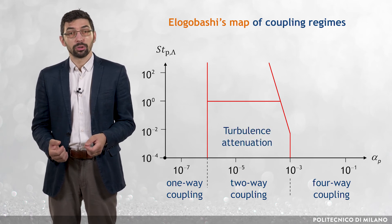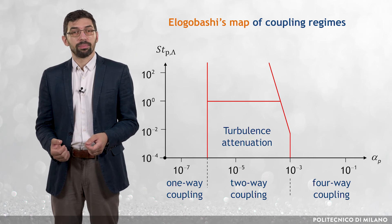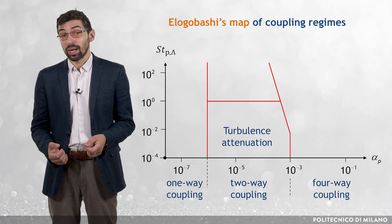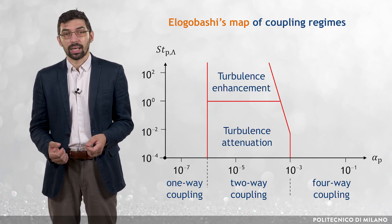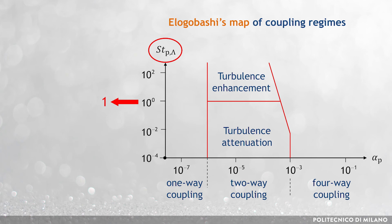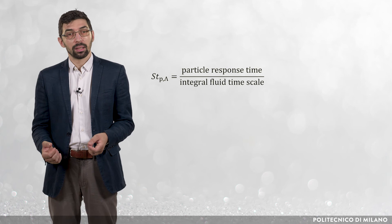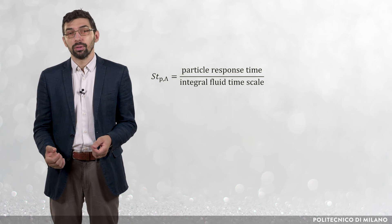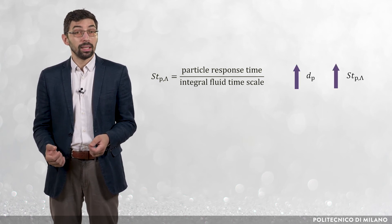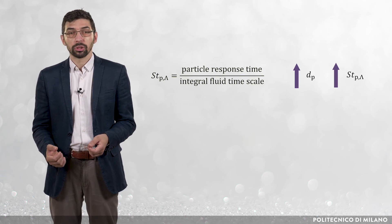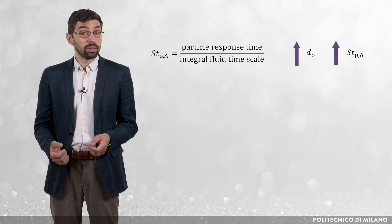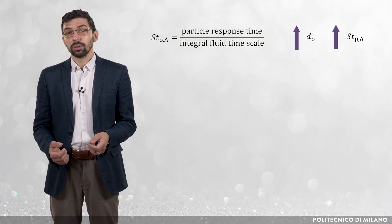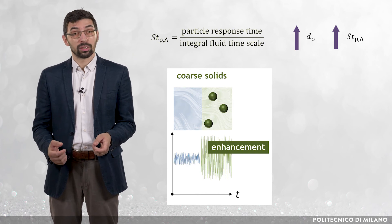Particularly, the fluid turbulence is attenuated in the presence of particles with St_Λ lower than 1, whereas it is enhanced by particles with St_Λ higher than 1. But what does this practically mean? If we recall the definition of the particle Stokes number — that is, the ratio between the particle response time and the characteristic time scale of the flow — we might note that St_Λ increases with the particle diameter. So, if we look at the turbulence modulation phenomenon from a different perspective, we might conclude that coarse solids enhance turbulence production, whereas fine solids enhance turbulence dissipation.